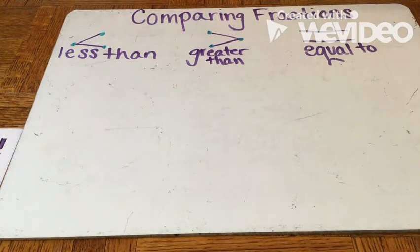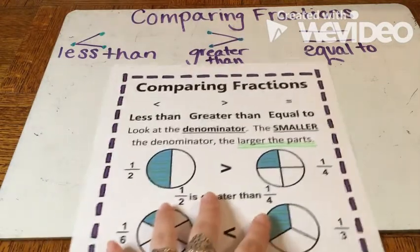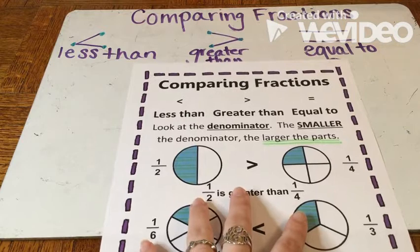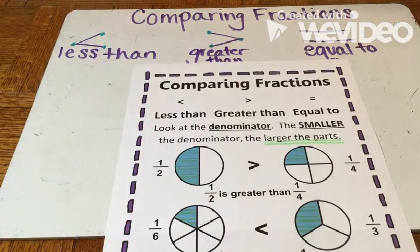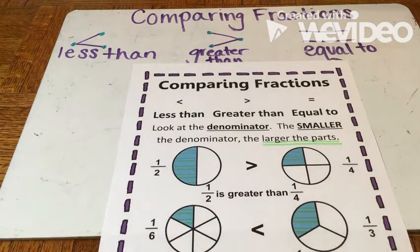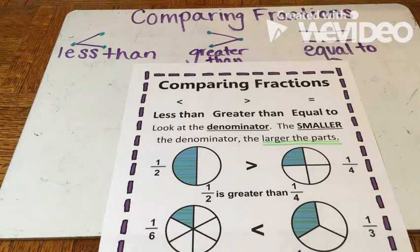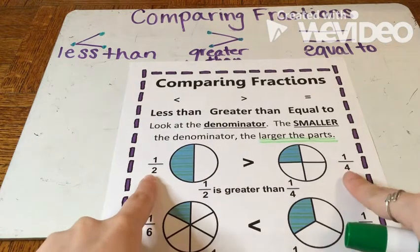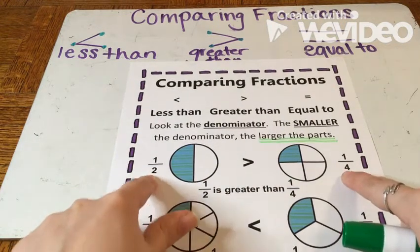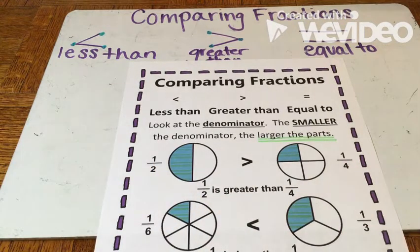So when we are learning about comparing fractions, what you are going to do is look at the denominator. For all of the fractions that we are comparing, the numerator is always going to be one, and that's called a unit fraction. So that's why we are so focused on the denominator, which is the bottom number. The smaller the denominator, the larger the parts you have, which means that fraction is greater.